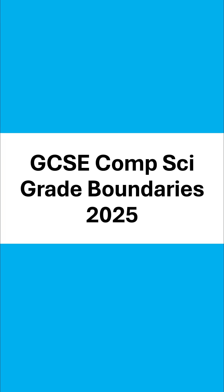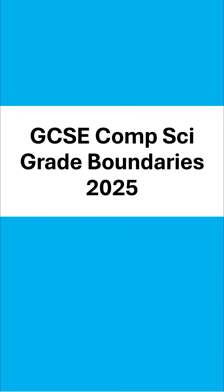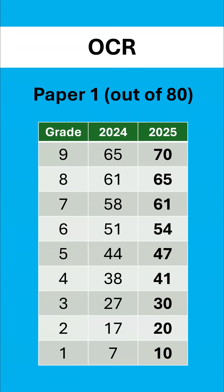A big well done if you are collecting your GCSE results today. Here are the grade boundaries for OCR computer science. For paper one, there has been a fair increase in most of these grade boundaries from last year. High grade boundaries do suggest an easier paper, but they also tend to rise naturally over time because more past papers and resources are made available.